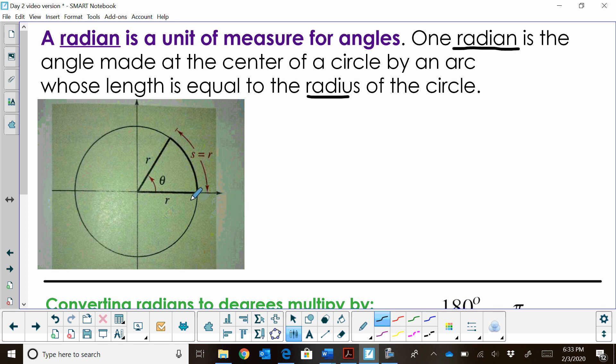One radian is the angle made at the center of a circle by an arc whose length is equal to the radius of the circle. This is called a radian, so let's see what that means.